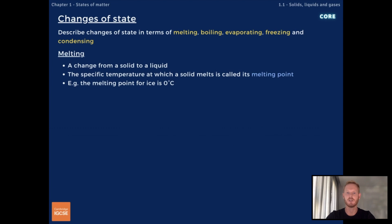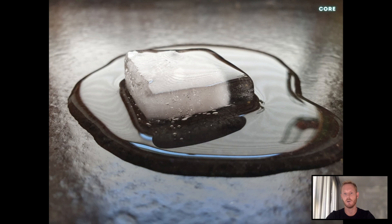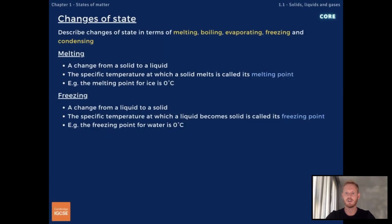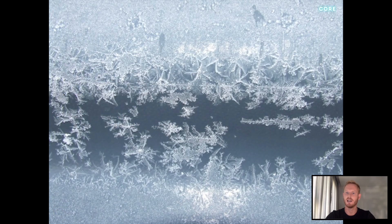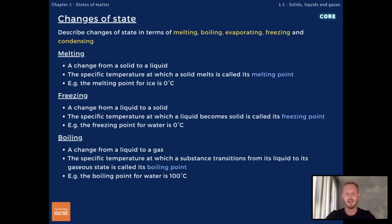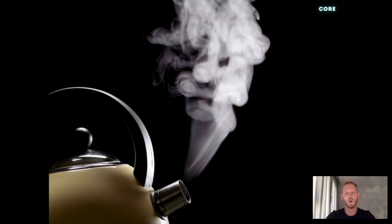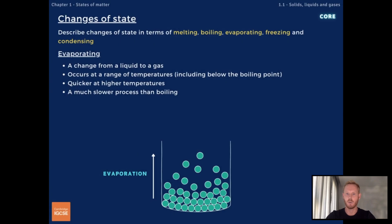Melting is a change from a solid to a liquid, and the specific temperature at which a solid melts is called its melting point. The melting point for ice, for example, is zero degrees Celsius. Freezing is a change from a liquid to a solid — the opposite of melting. The specific temperature at which a liquid becomes a solid is called its freezing point, which is the same temperature as the melting point. Boiling is a change from a liquid to a gas, and the specific temperature at which a substance boils is called its boiling point. The boiling point for water is 100 degrees Celsius. Evaporating, like boiling, is a change from a liquid to a gas.